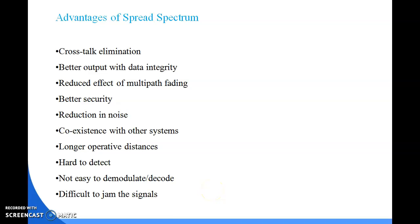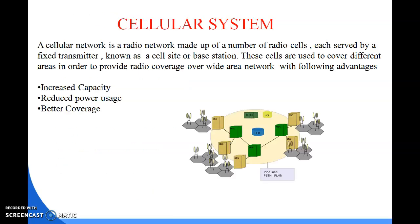Welcome back. We discussed the advantages of spread spectrum: crosstalk elimination, better output with data integrity, reduced effect of multi-path fading, better security, reduction in noise, coexistence with other systems, longer operative distances, hard to detect, not easy to demodulate or decode, and difficult to jam the signal. These are the advantages of spread spectrum.